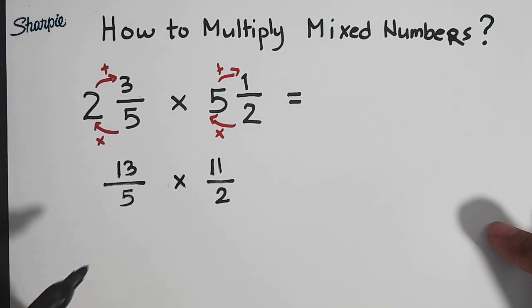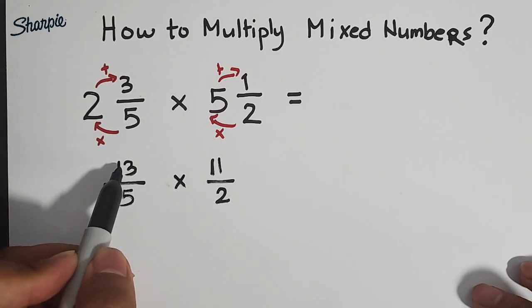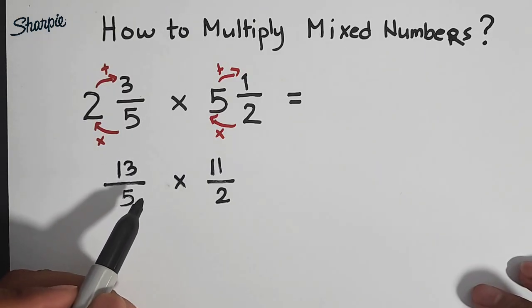What's next? Next, we need to multiply these improper fractions. So we have here 13 times 11. What do you think is the product?